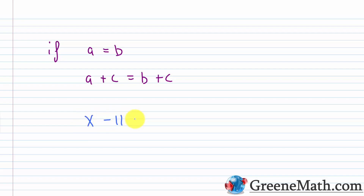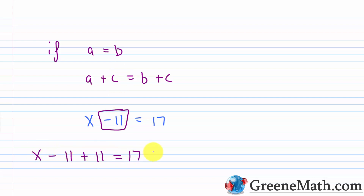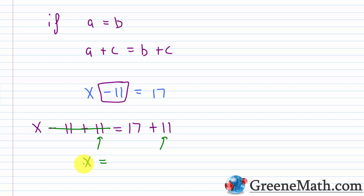Something like X minus 11 equals 17. When I solve an equation, I want to isolate the variable on one side. To isolate X, I need to undo what's being done to it — here, I'm subtracting 11. The opposite of subtracting 11 is adding 11, so I use the addition property of equality to add 11 to each side. X minus 11 plus 11 equals 17 plus 11, giving me X equals 28. Checking: 28 minus 11 does give 17, so this is the correct solution.